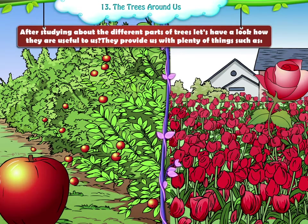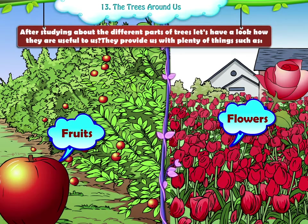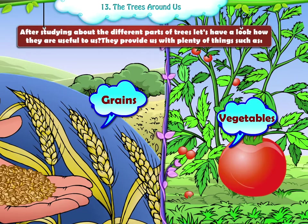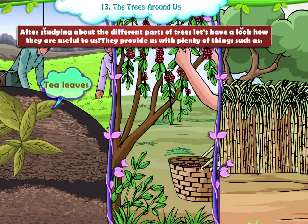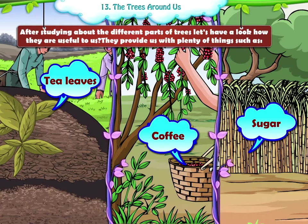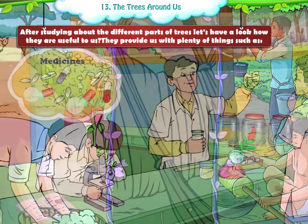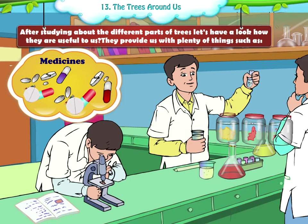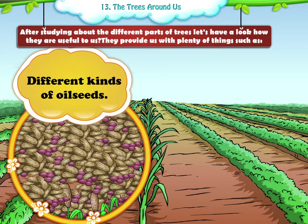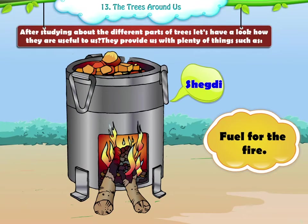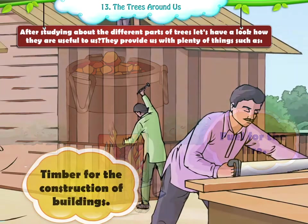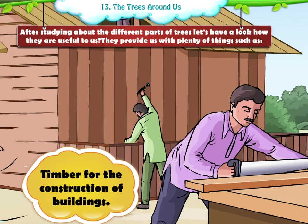After studying about the different parts of trees, let's have a look at how they are useful to us. They provide us with plenty of things, such as: flowers and fruits, grains and vegetables, tea, leaves, coffee and sugar, cotton, jute and rubber, medicines, different kinds of oil seeds, fuel for the fire, and timber for the construction of buildings.